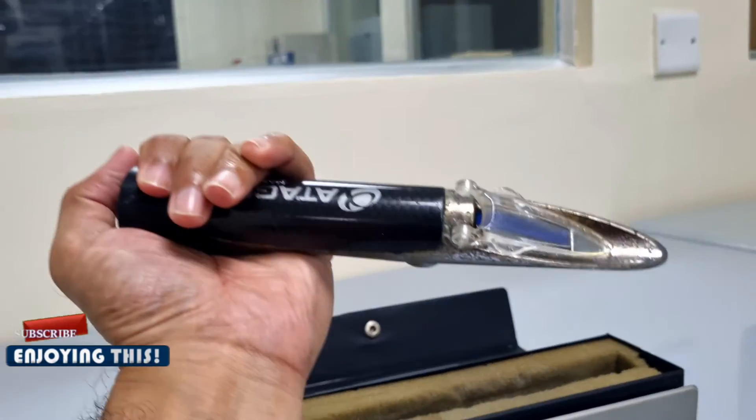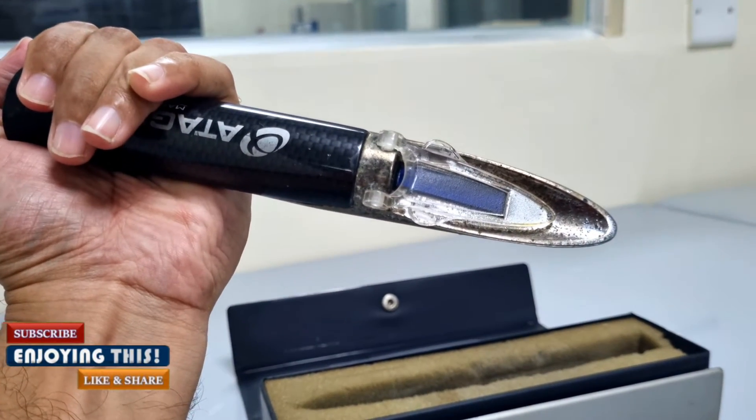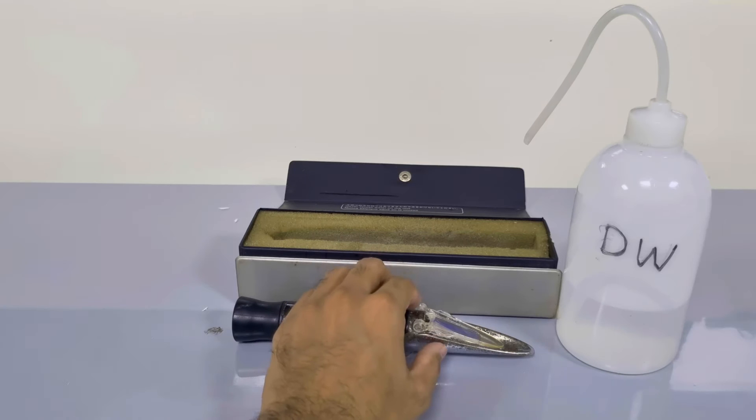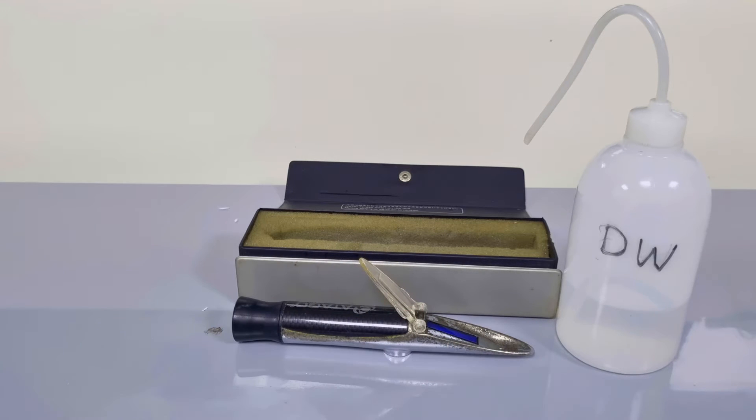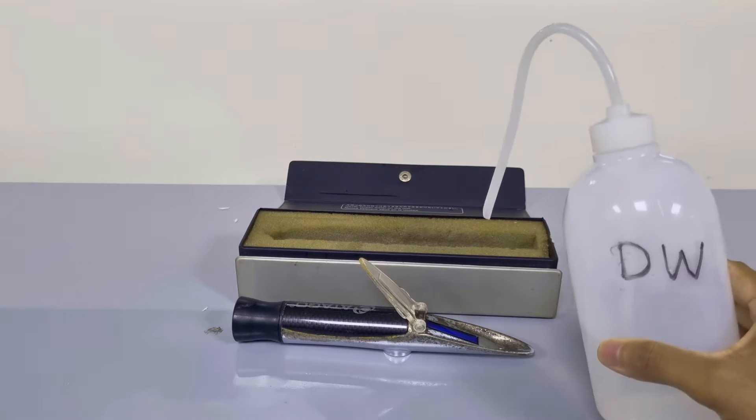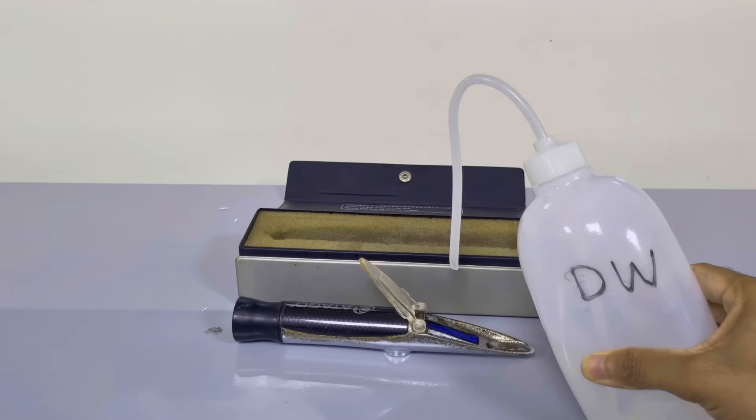Calibration is done first to determine whether a reading of 0 is obtained or if a correction needs to be applied. Add few drops of distilled water to the prism of the refractometer.